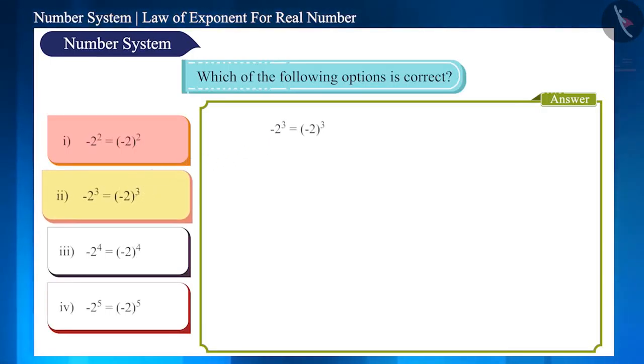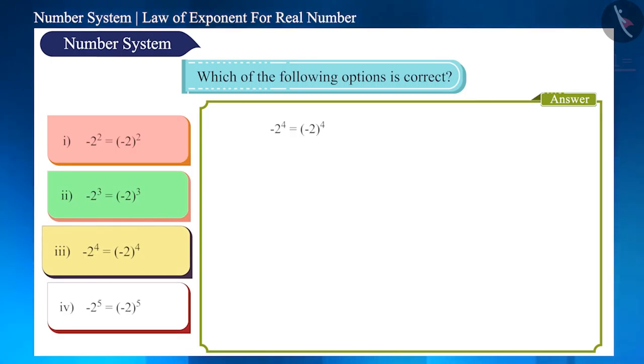Now let's see the second option. Here on the left side, the power of -2 is 3. That makes it cube of -2 and its value is -8. On the right side, the power of -2 in brackets is 3 and it also has a value of -8. That is, the left hand side is equal to the right hand side, so this option is correct.